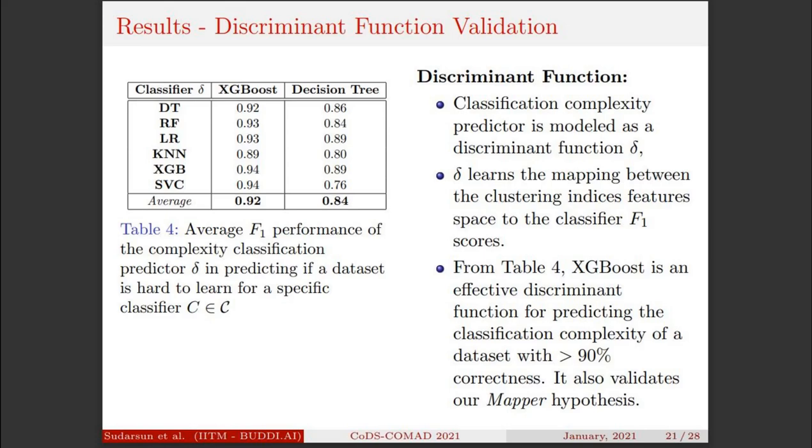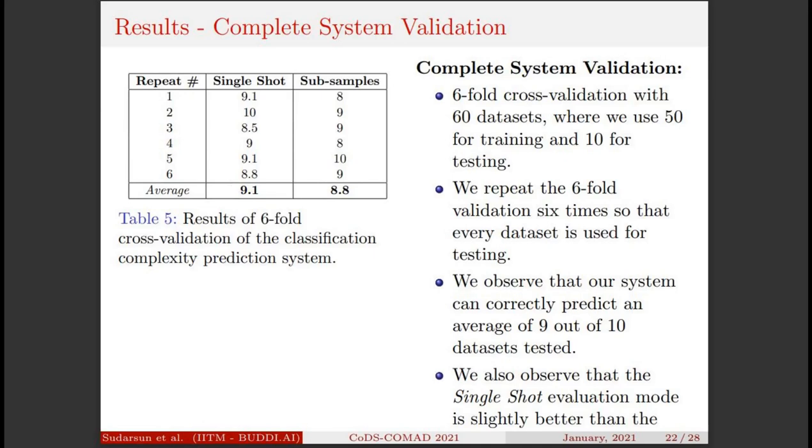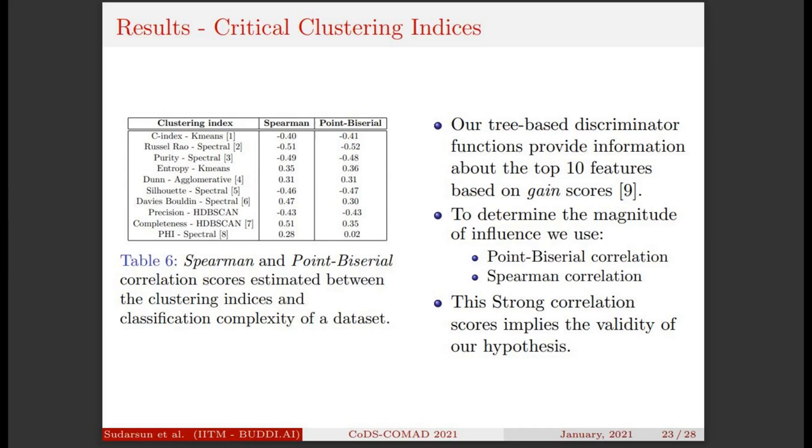To validate the complete system, we do 6-fold cross-validation over 60 datasets. We repeat this 6-fold validation 6 times to ensure every dataset is used for testing. From the table, we can observe that on average 9 out of 10 times our system's predictions were right. We further extracted the important cluster indices that influence the complexity of a dataset. We used different correlation metrics to determine the direction of influence for these critical clustering indices.